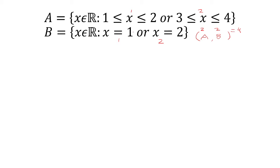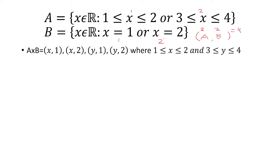We start with set B, which is our Y. It's either 1 or 2, and we know there are 4 total cases — 2 cases with Y=1 and 2 cases with Y=2. Now we combine: the first case of A, where X is between 1 and 2, has to go with both the first case of B and the second case of B — so paired with Y=1 and Y=2.